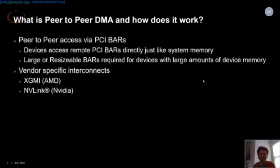I also want to mention a couple of vendor-specific interconnects: xGMI, which is AMD's interconnect, and NVLink. They are often faster or provide different coherency guarantees compared to PCI or PCIe, but they're not generic solutions. You may run into them in discussions of peer-to-peer.